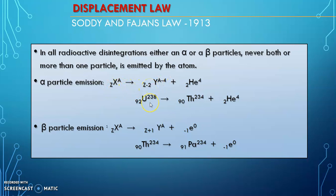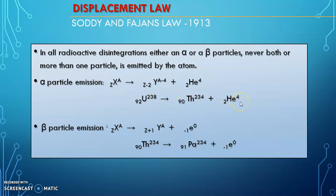Here, we can see with the help of an example: uranium-238, when it undergoes alpha particle emission, the mass number is reduced by 4, giving 234 with thorium. And also, the atomic number is reduced by 2, that is 92 becomes 90, along with the emission of a helium nucleus.